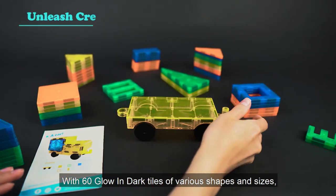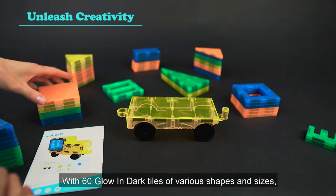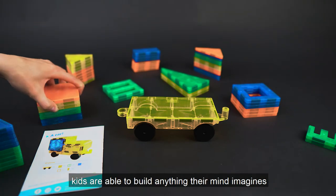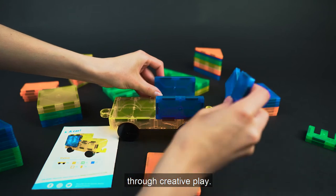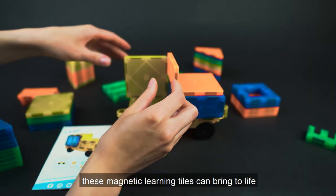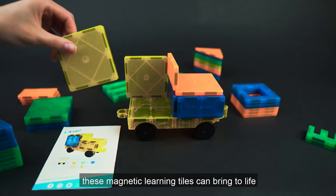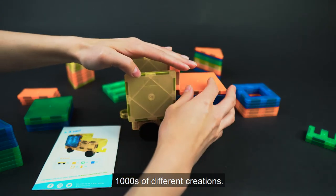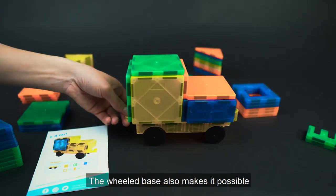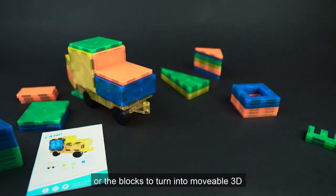With 60 glow-in-the-dark tiles of various shapes and sizes, kids are able to build anything their mind imagines through creative play. With a simple click, these magnetic learning tiles can bring to life thousands of different creations. The wheeled base also makes it possible for the blocks to turn into movable 3D vehicular structures.